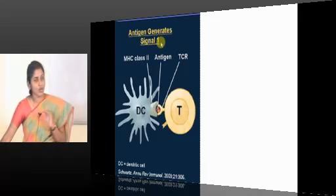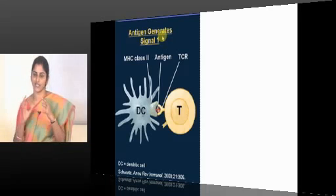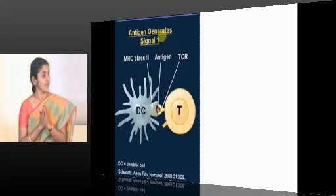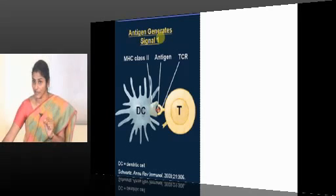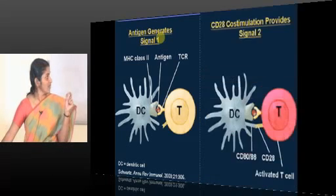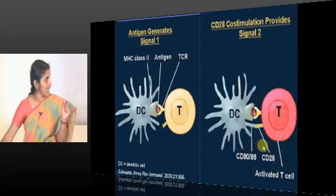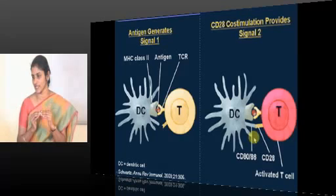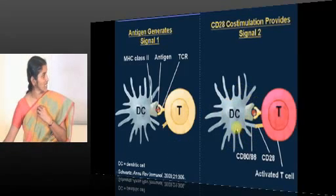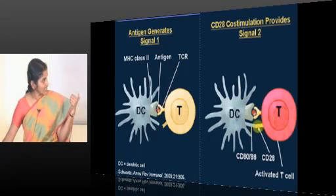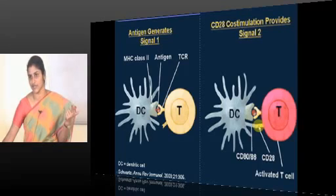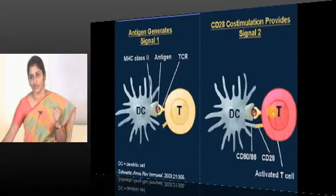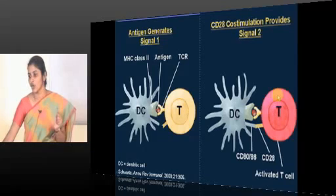Coming to the important steps in immune response: the antigen is processed and presented with the MHC to T cells, which accept it via the T cell receptor. This is called Signal 1. Signal 1 is not enough for the immune response, so it is followed by Signal 2 — the engagement of coreceptors. CD80 present on the surface of APCs and CD28 present on the surface of T lymphocytes are called coreceptors or costimulatory molecules.